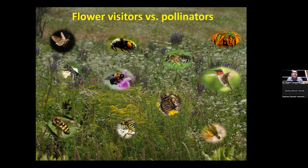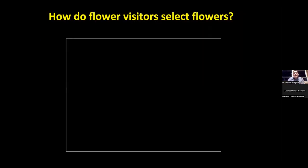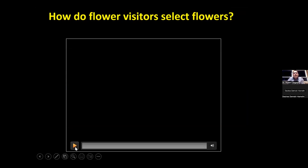These resources change rapidly over time and space. One misconception is that insects, because they have such tiny brains, are innately attracted to certain colors — so we'll plant blue flowers for bees and white flowers for moths. Although that's partially true, the vast majority of species aren't pre-programmed. They need the flexibility to track these resources over time and space, and the way they do that is through learning and memory.